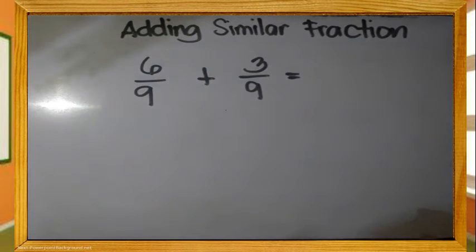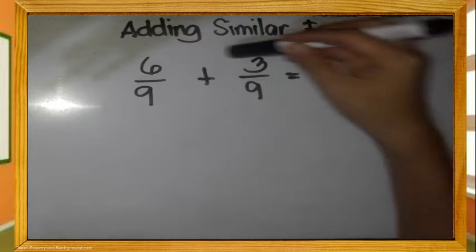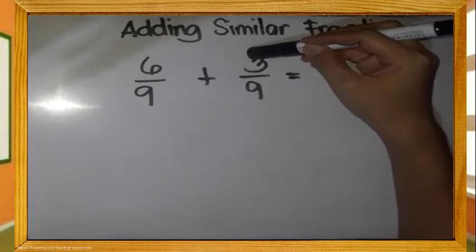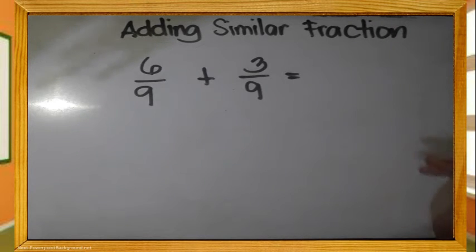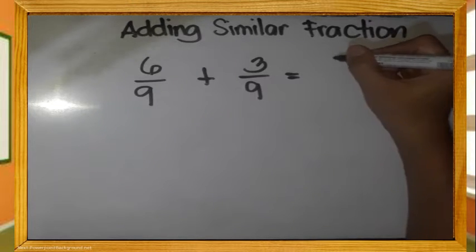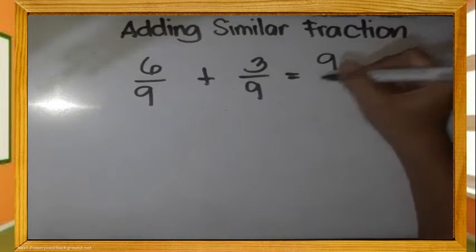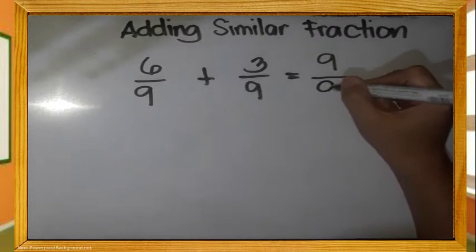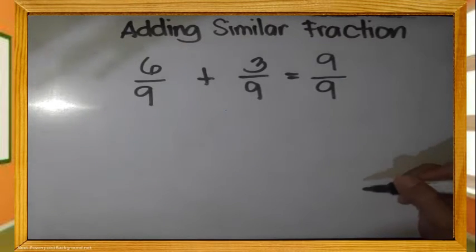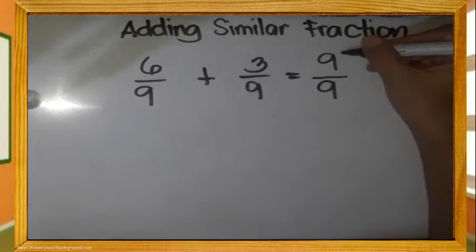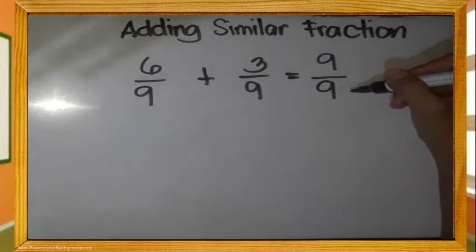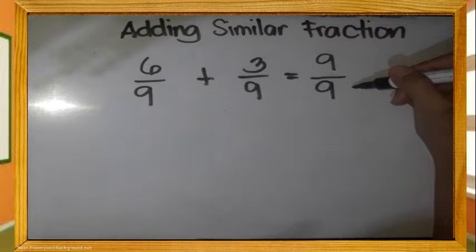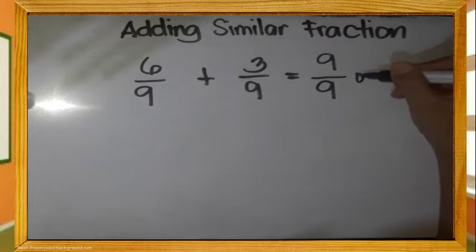Another example — we have 6 ninths plus 3 ninths. Add the numerators and copy the denominator. So, 6 plus 3 is 9. Copy the denominator, 9. Do not forget to simplify your final answer. Since the numerator and denominator are the same, 9 divided by 9, that is 1.